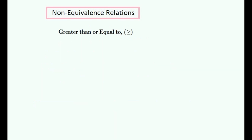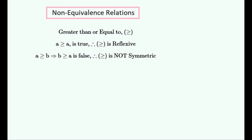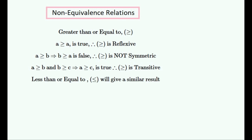Now to study the greater than or equal to relation. It contains an equality so it is reflexive — any number is always greater than or equal to itself. A counter-example may be found very easily to show that it is obviously not symmetric, but it is transitive for the same reason that the previous relation was transitive, because the lower bound for C is shifted above A. The less than or equal to operation will give a similar result to that of the greater than or equal to operation.